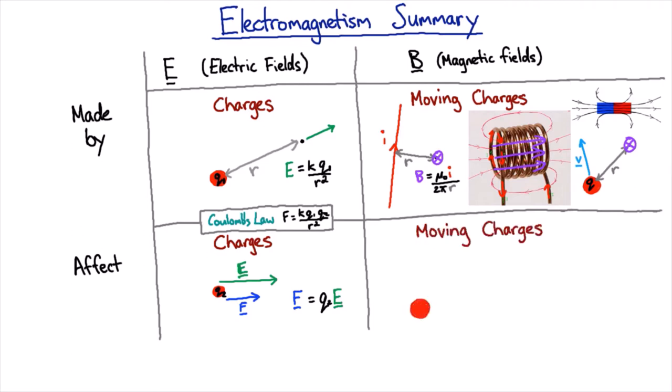So if I have a charge in a magnetic field, then if that charge isn't moving, it doesn't actually see any force due to that magnetic field. So I have to have a moving charge, and if I have a moving charge in a magnetic field, then it does see a force.